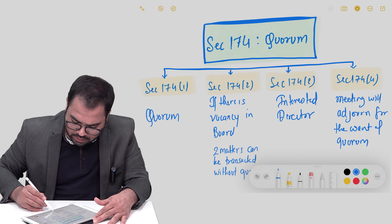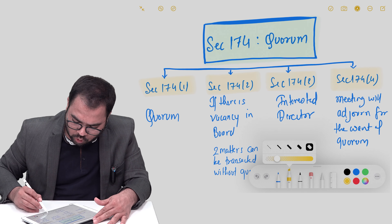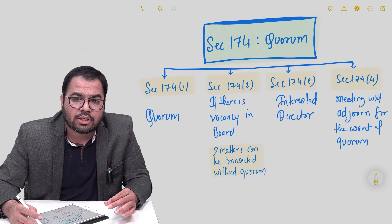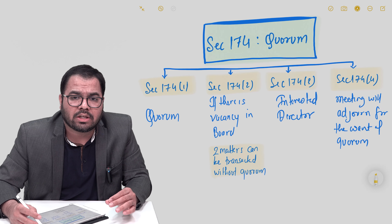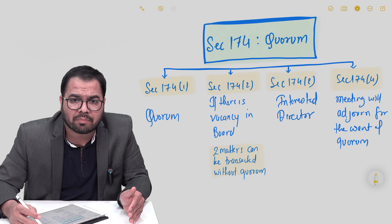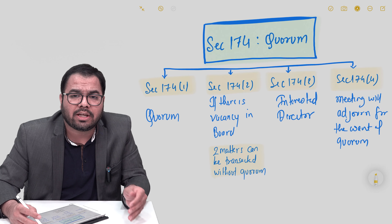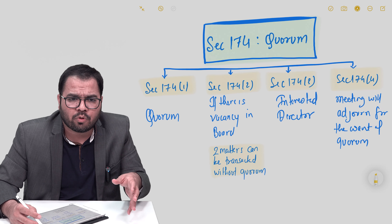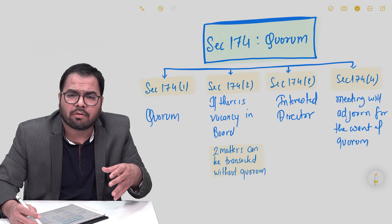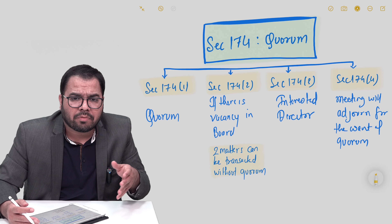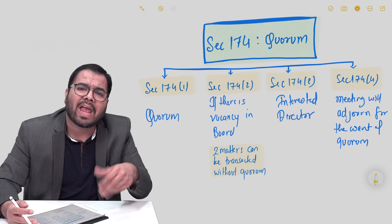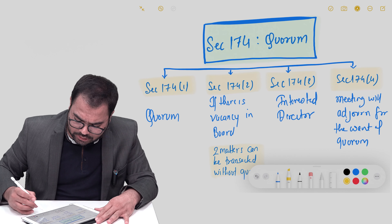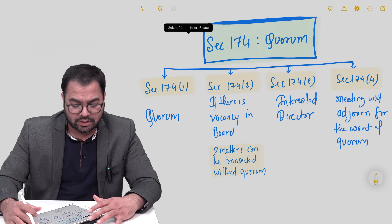Those two specific matters can only be transacted without the quorum when there is a vacancy in the board — meaning the directors are simply not there in the company, because they have been removed, resigned, or passed away. Subsection 2 deals with that situation. Subsection 3 actually provides for interested directors.